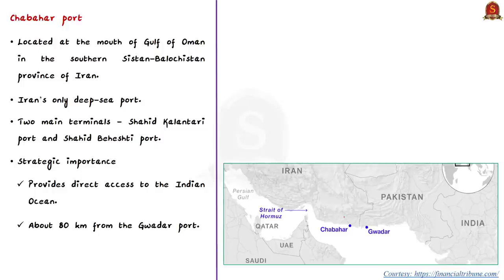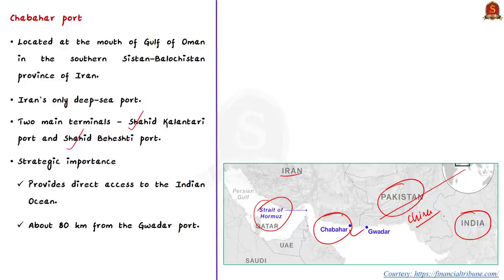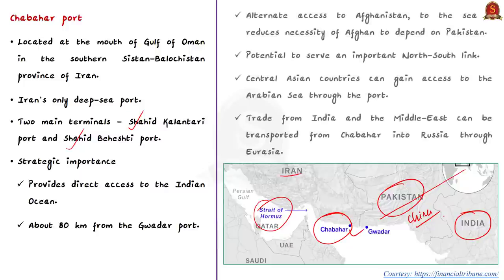Chabahar Port is located at the mouth of the Gulf of Oman, in the southern province of Iran, situated around the edges of the Strait of Hormuz. Chabahar is Iran's only deep-sea port and has two main terminals: Shahid Kalantari Port and Shahid Behesti Port. This port provides direct access to the Indian Ocean and is only about 80 kilometers from Gwadar Port. Gwadar Port is a Pakistani port operated by China and forms an important component of the China-Pakistan Economic Corridor (CPEC). When India and Iran signed an MOU to develop Chabahar Port, it was seen as a strategic move to counter China's influence in Gwadar. Additionally, the port provides alternate access to landlocked Afghanistan, which is currently dependent on Pakistan for all its seaborne external trade.